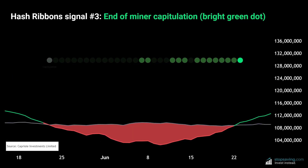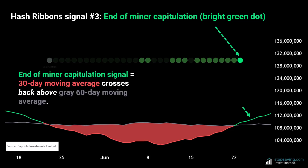Next is Hash Ribbon signal number three: the end of miner capitulation signal. The 30-day moving average of the hash rate now crosses back above the 60-day moving average. This signals that miners have officially recovered from the capitulation phase, and Bitcoin's hashing power has made a strong comeback. The 30-day moving average also turns bright green.